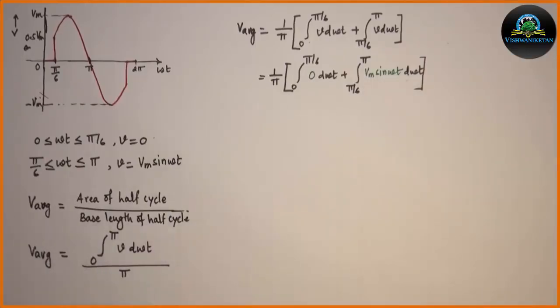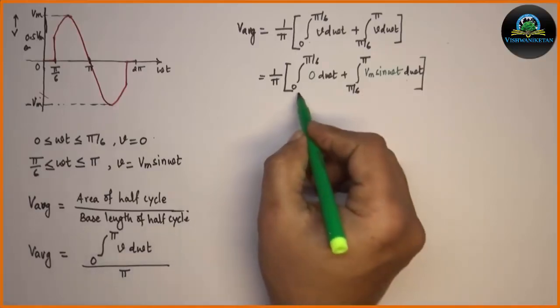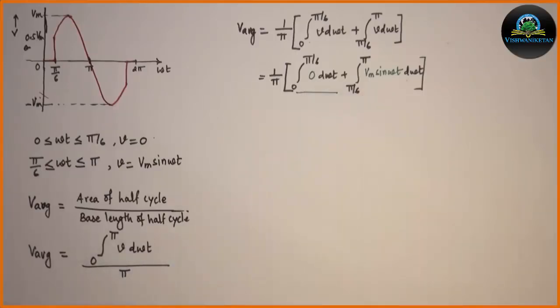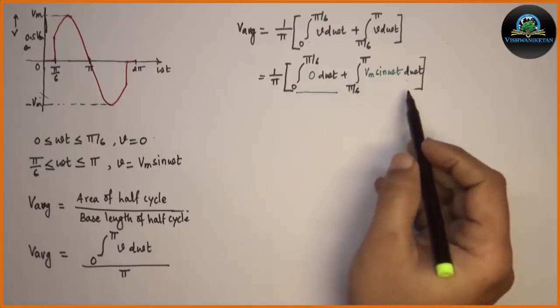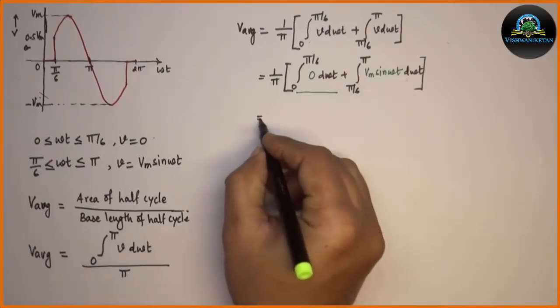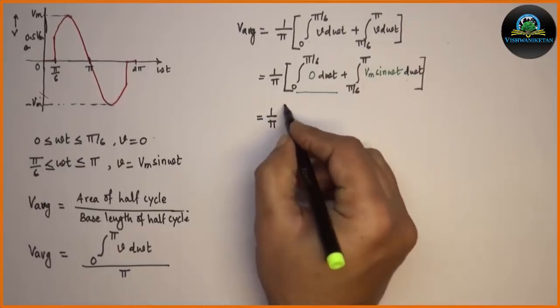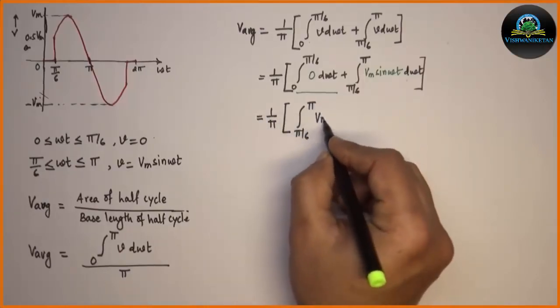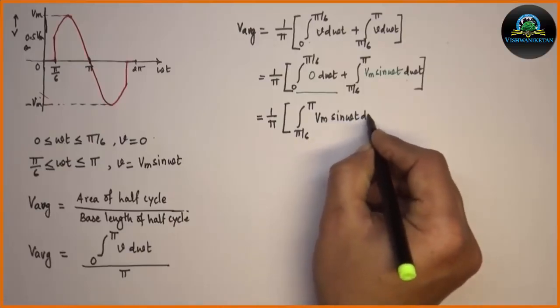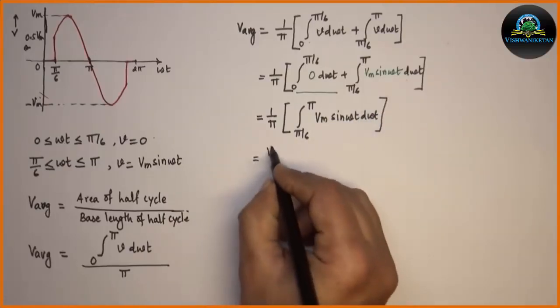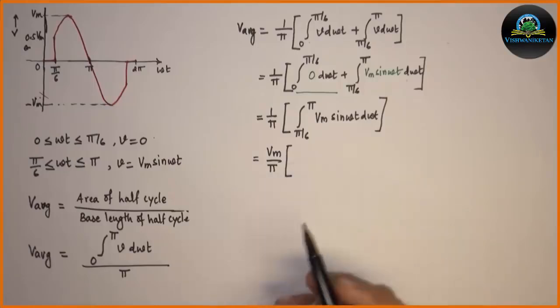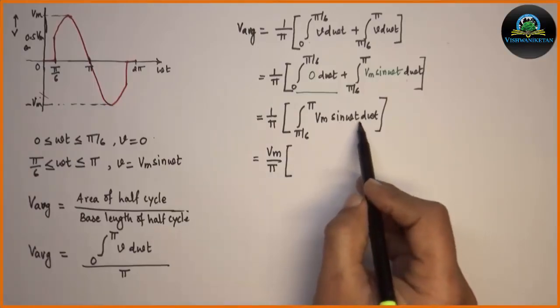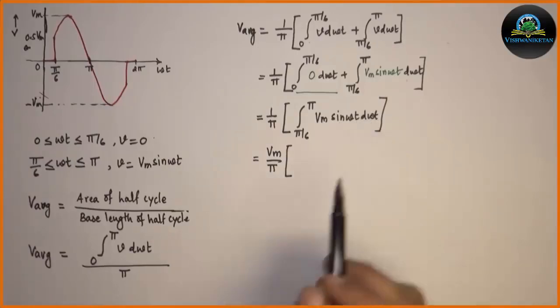The integration of first part is 0. Hence we can take integration of second part and solve it. Integration of second part is minus cos omega t.